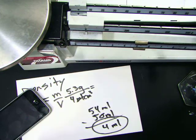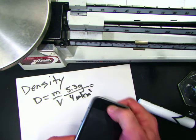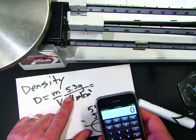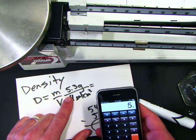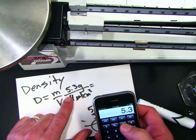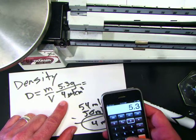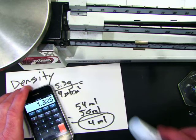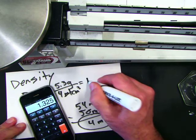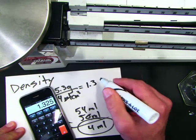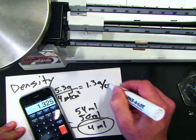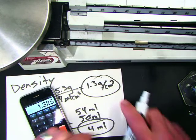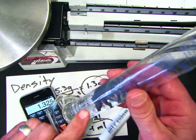1 cubic centimeter is equal to 1 milliliter. So, let's go ahead and take our calculator, and we will find the density. We've got 5.3 grams divided by 4 cubic centimeters equals 1.3 grams per centimeter cubed for the density of our rhino.